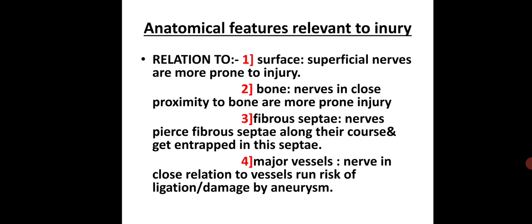In relation to the surface, superficially placed nerves are more prone to injury by external objects — for example, the median nerve at the wrist often gets cut by glass. In relation to bone, nerves in close proximity to a bone or joint are more prone to injury — for example, radial nerve injury in a fracture of the shaft of the humerus. Some nerves pierce fibrous septa along their course and may get entrapped, causing entrapment neuropathies — for example, crutch palsy, a radial nerve palsy due to entrapment where it leaves the axilla. Nerves in close relation to vessels also risk ligation or damage by aneurysm.